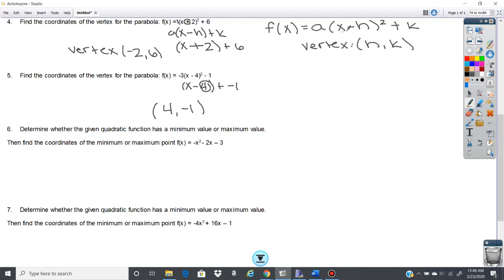So basically anytime I'm plugging into that h there, if you have a plus sign, you're going to pull out a negative. Minus sign, you're going to pull out a positive. So you're going to pull the opposite out of the parentheses for that x value of your vertex.